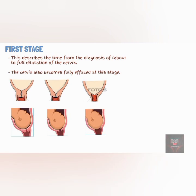In summary, when the cervix dilates it opens up, and when the cervix effaces it thins out. Membrane rupture often occurs prior to or in the first stage of labor.